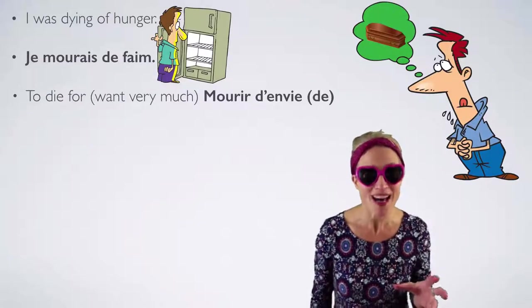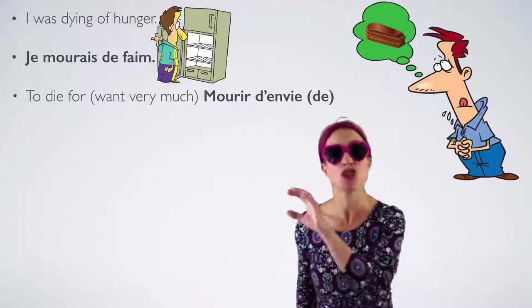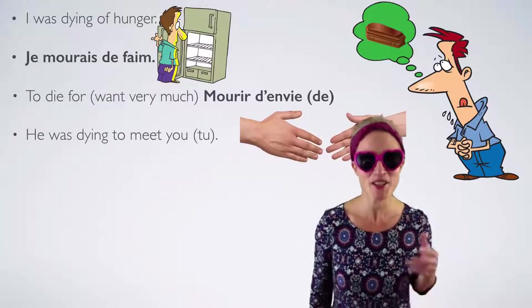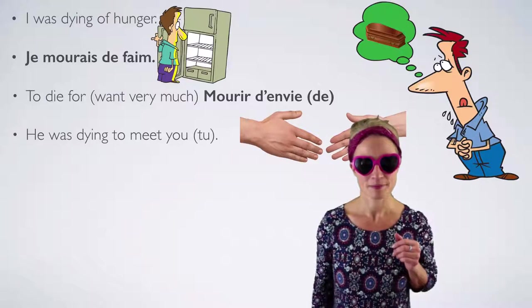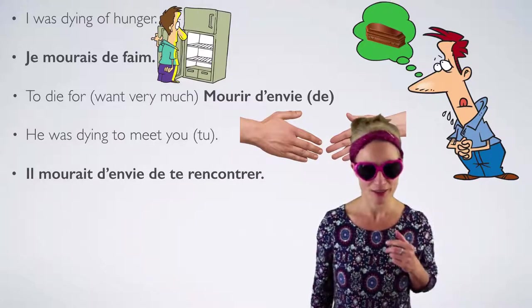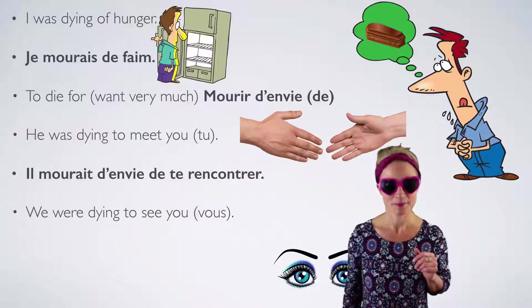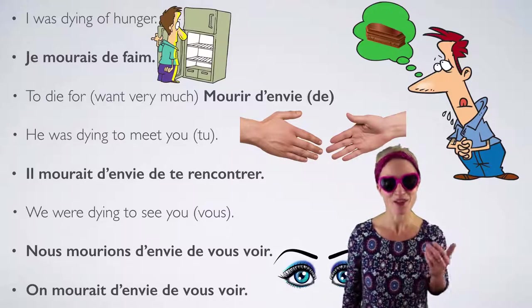'To die for' — as in you really, really want something very much — in French the expression is 'mourir d'envie de,' then whatever it is you're dying for. 'He was dying to meet you' — Il mourait d'envie de te rencontrer. 'We were dying to see you' — Nous mourions d'envie de vous voir. If you're going to use 'on': On mourait d'envie de vous voir. Useful phrase there. Et voilà les amis!